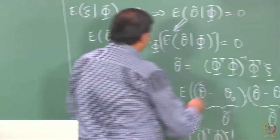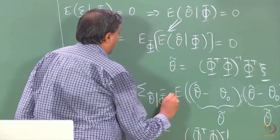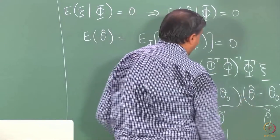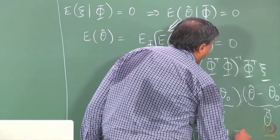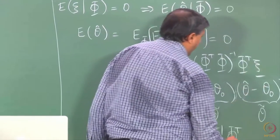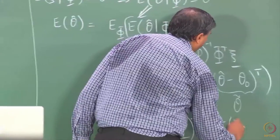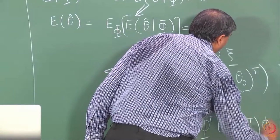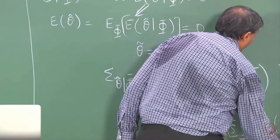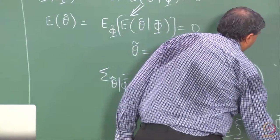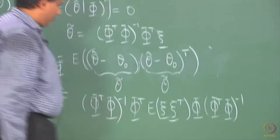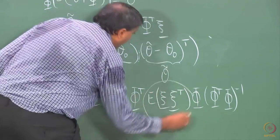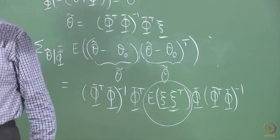Now that we are evaluating the conditional covariance, phi becomes fixed or deterministic, and I can take the expectation past these phi's. Everything now depends on the quantity: expectation of Z times Z transpose.